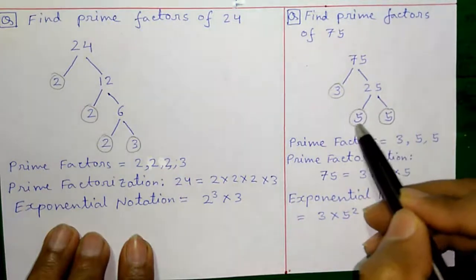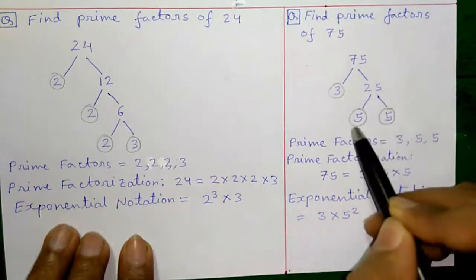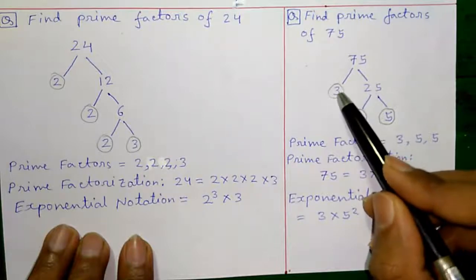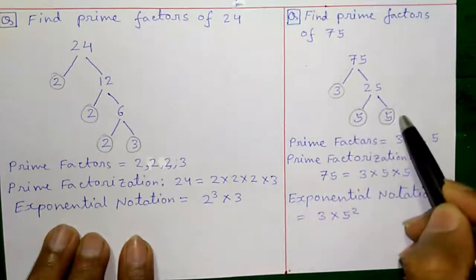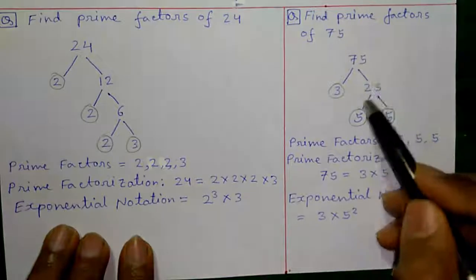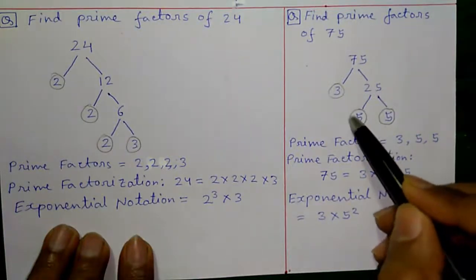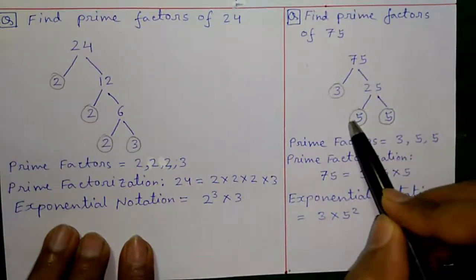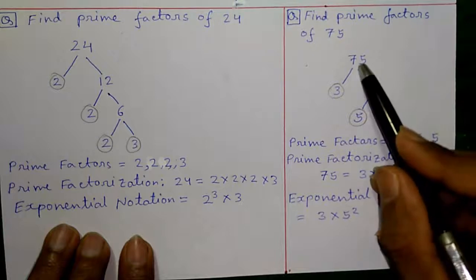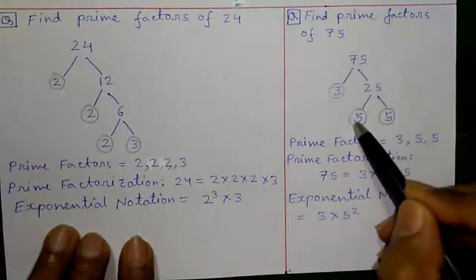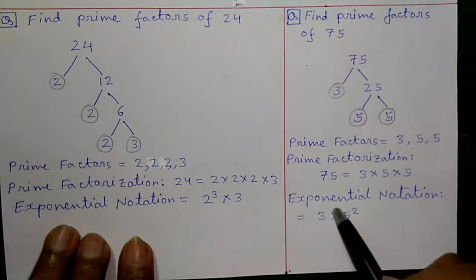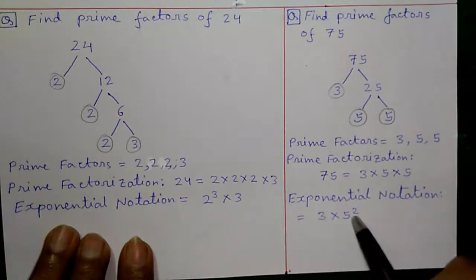3, 5 and 5. And the prime factorization will be 75 equals to 3 into 5 into 5. Remember here 5 is coming 2 times but we have to remember that the multiplication of the prime factors should be equal to the original number. So here if we take only 1 five you will get 3 into 5, 15. We will not get 75. So we have to take all the leaf nodes which are the prime numbers. And the exponential notation will be 3 into 5 square.